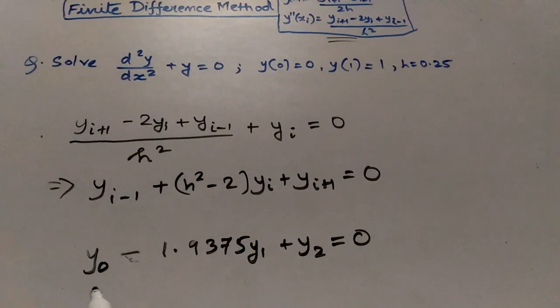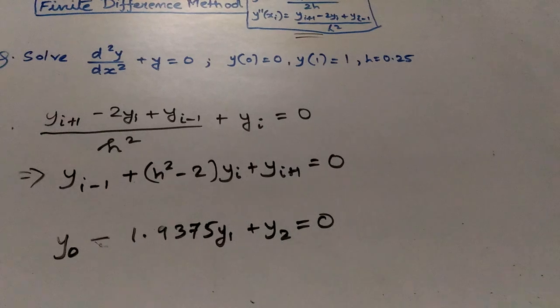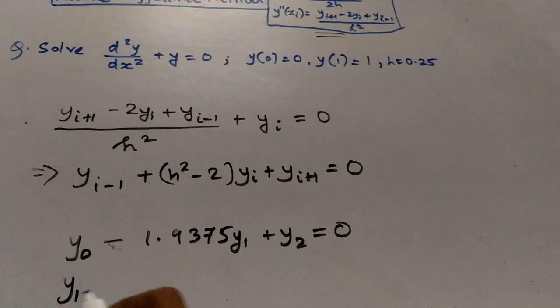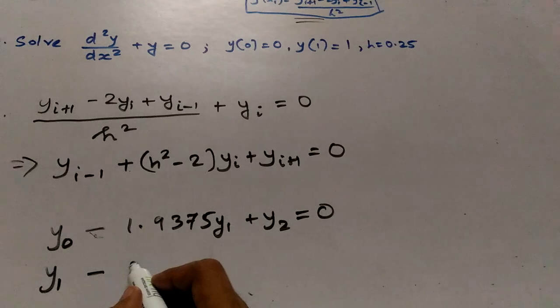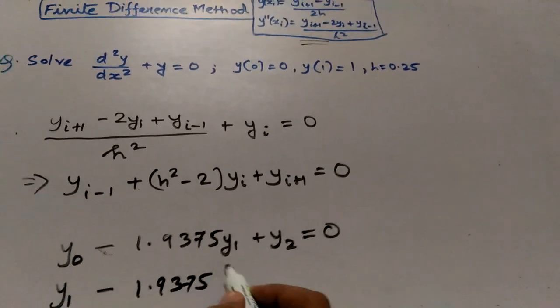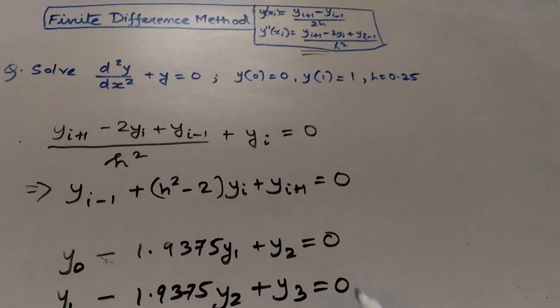Then I will move on to the next value of i. That is i minus 1 will be 1, therefore y_1 minus 1.9375 y_2 plus y_3 equals 0.